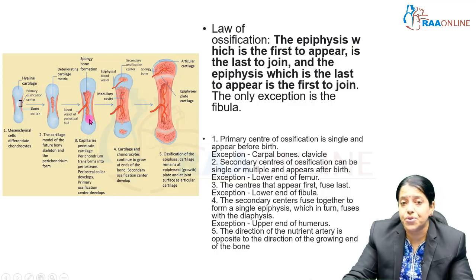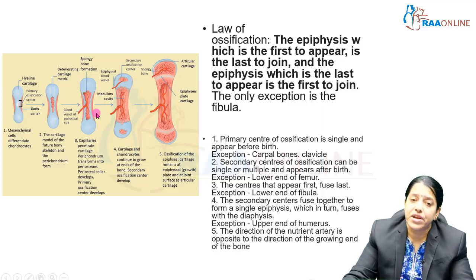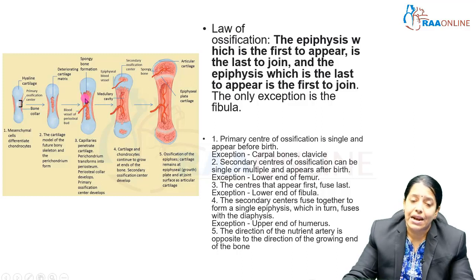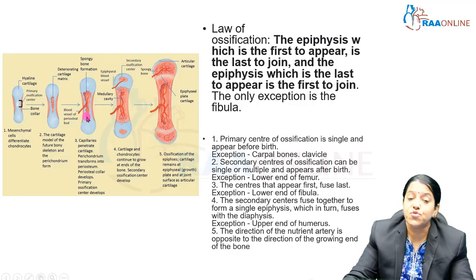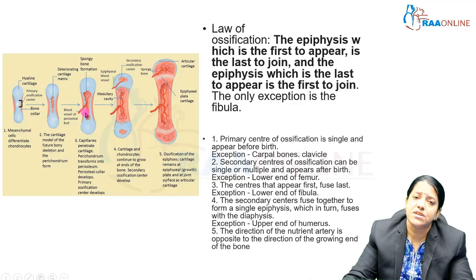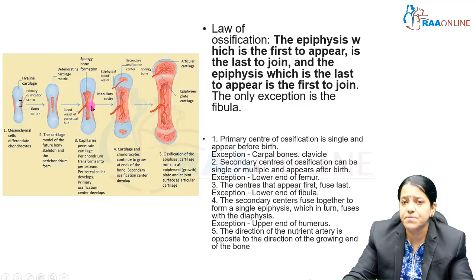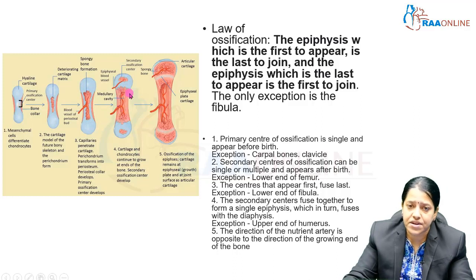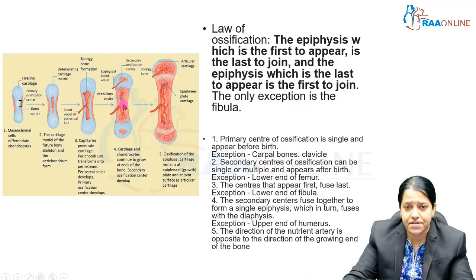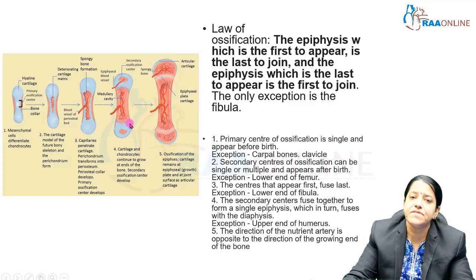Ossification always starts from the diaphysis. Blood supply starts coming into the diaphysis, piercing the perichondrium and entering the model. A cluster of bone cells forms and spongy bone begins to appear — this is where the primary ossification center is formed. As bone tissue is laid out, a medullary cavity is also formed, more blood supply arrives, and slowly the perichondrium is replaced by the periosteum.